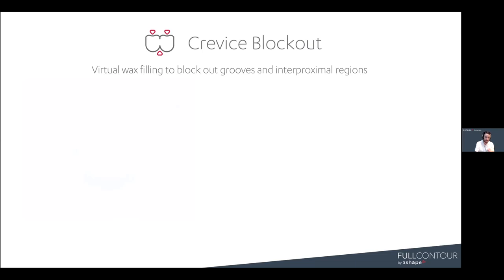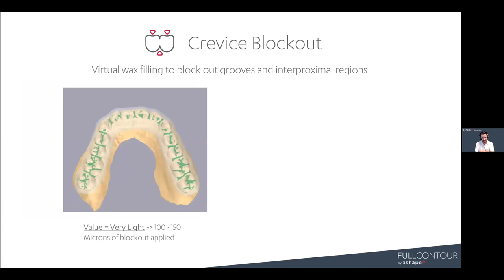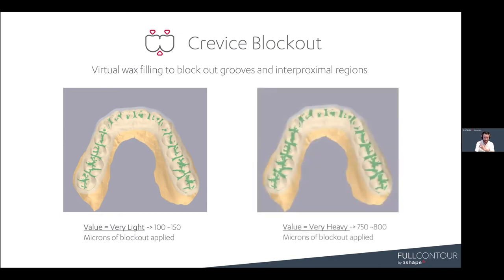Crevice blockout is virtual wax filling to block out grooves and interproximal regions. The minimum setting applies 100 to 150 microns of blockout to the central groove, central fossa, and interproximal spaces. At the maximum setting, up to 750 to 800 microns of blockout is applied. This helps ensure the appliance fits nice and passive — you get your retention from other settings, but you won't be hung up interproximally on small slivers of material.